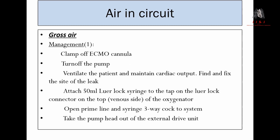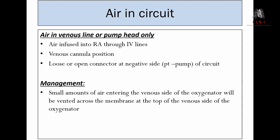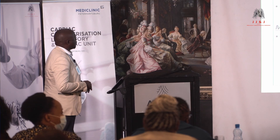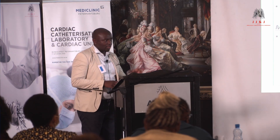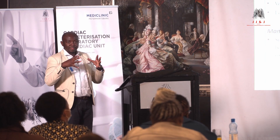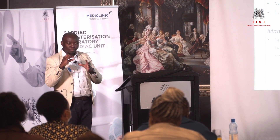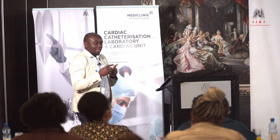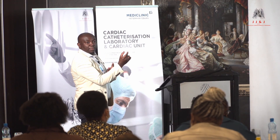Looking at air on the venous line and pump head, we consider three possibilities: air infused into the right atrium through IV lines, which is highly unlikely but possible; venous cannulation and positioning; and loose open connectors exposed to negative pressure. If a small amount of bubbles enters the system, the safety mechanism will alarm saying there is air in the system. If bubbles are too big, it becomes an airlock — at 10 ml or more, the pump will actually stop.